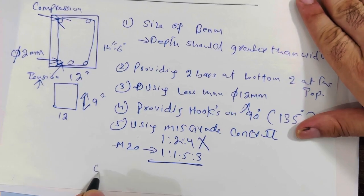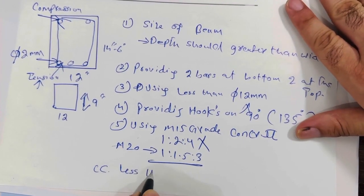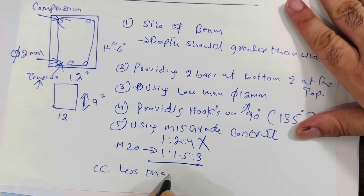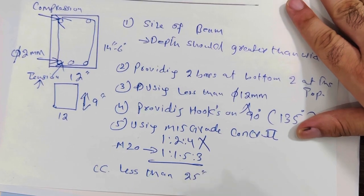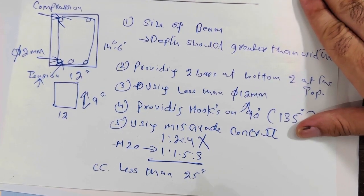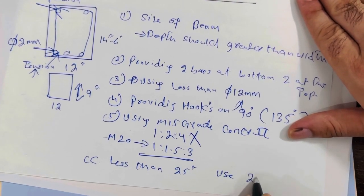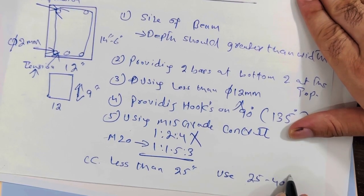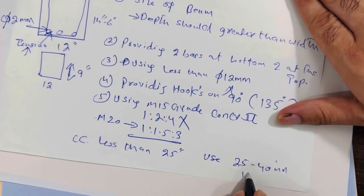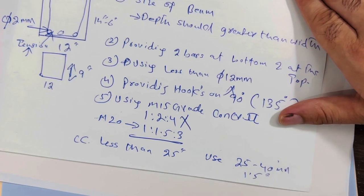Another big mistake is providing a concrete cover of less than 25 millimeters. The correct concrete cover should be 25 to 40 millimeters, or a minimum of 1.5 inches normally.